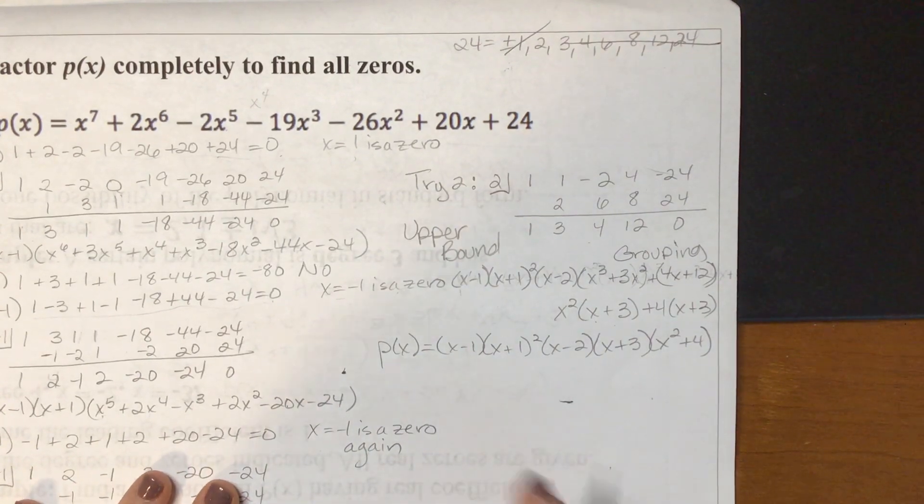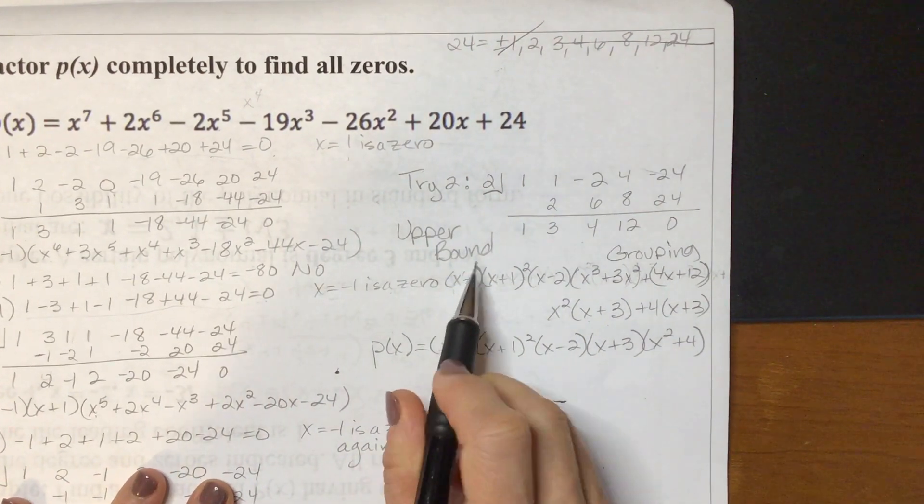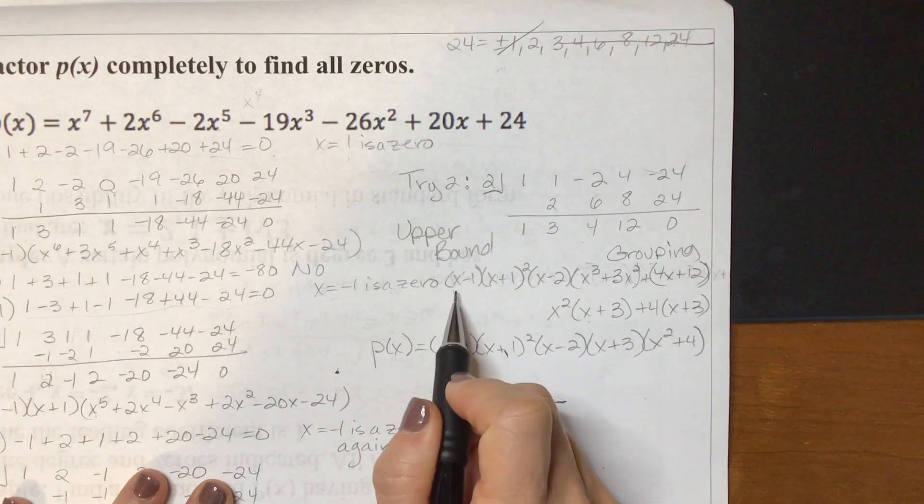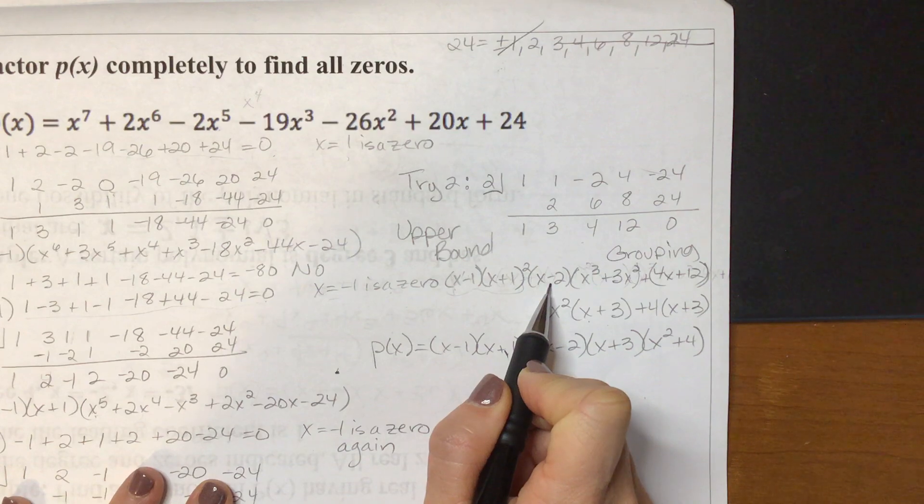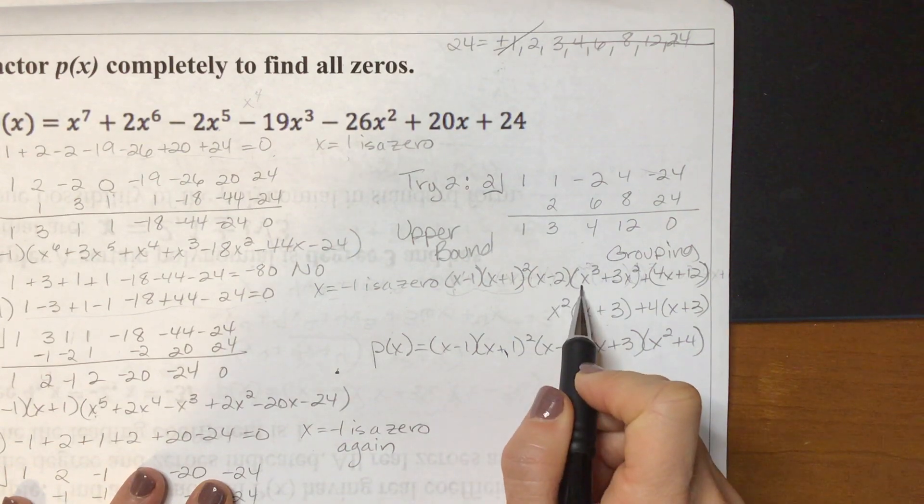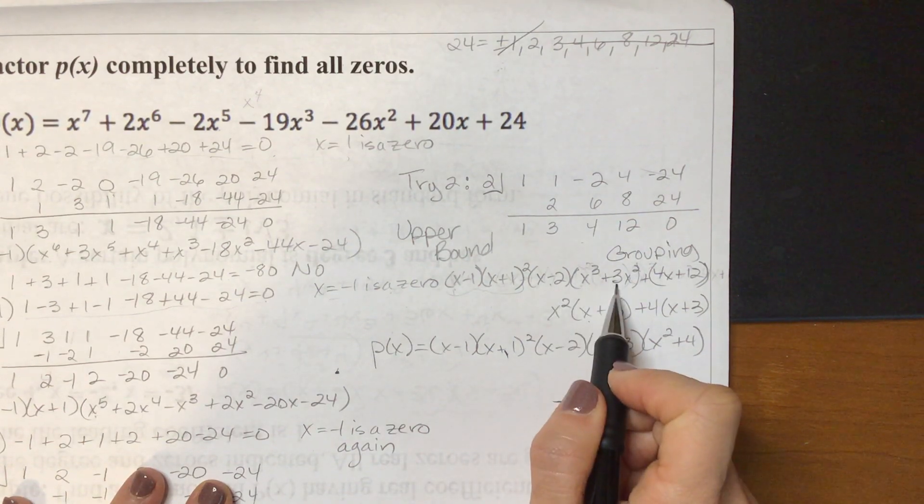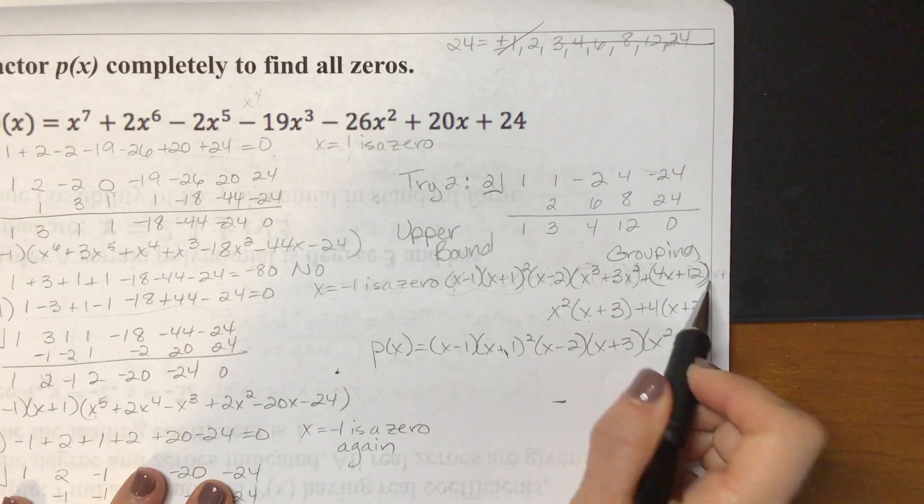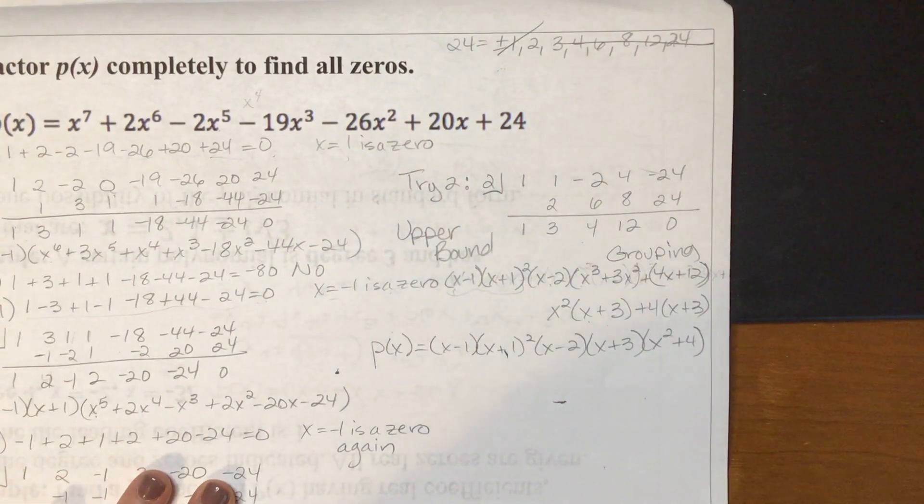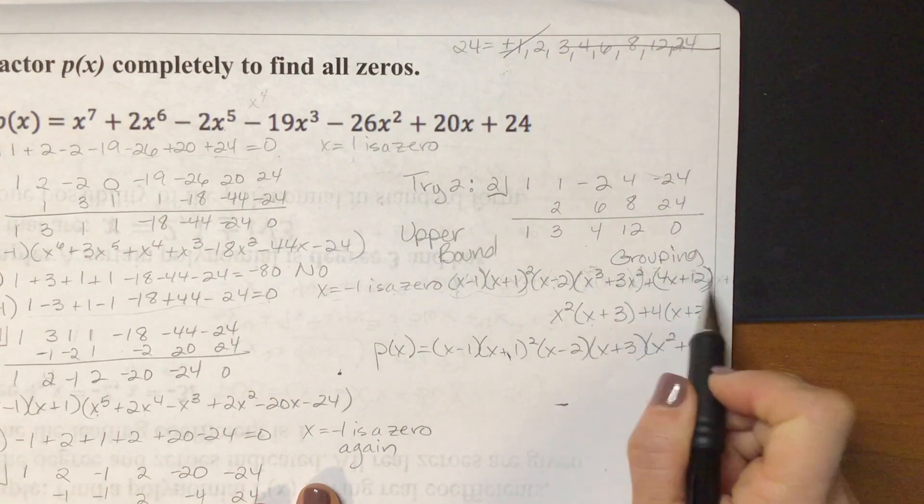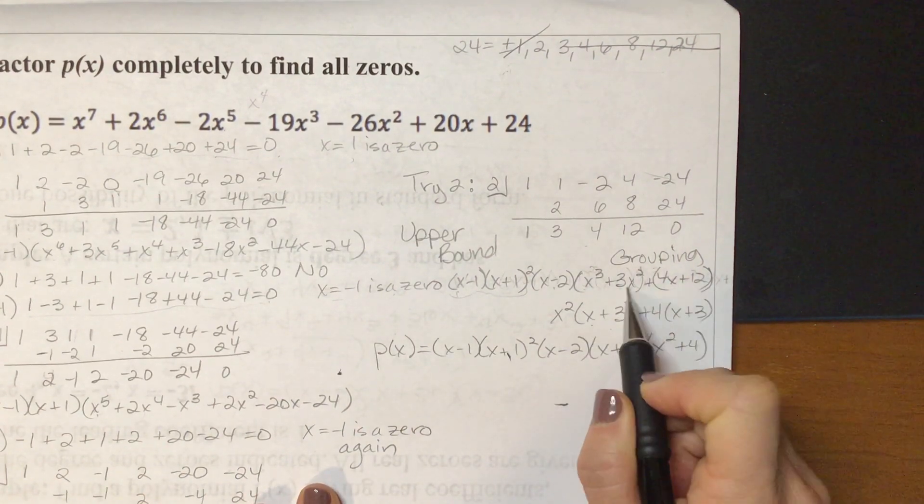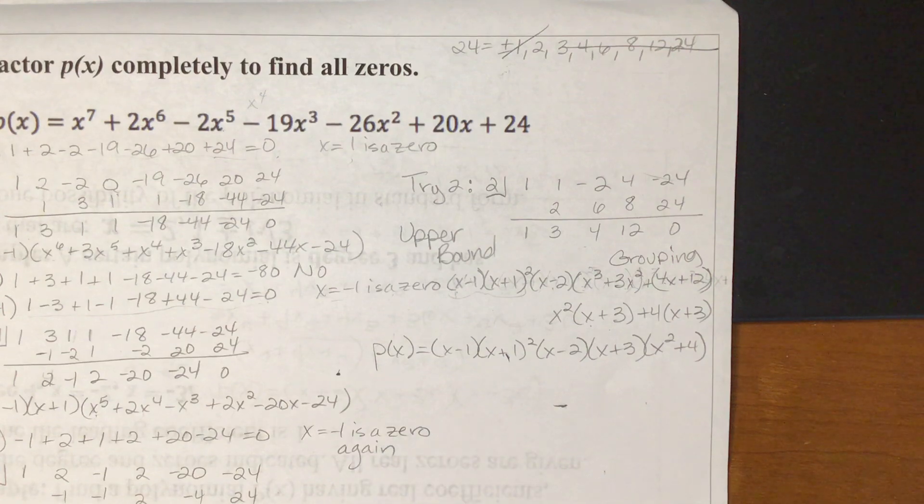And I was really lucky at this point. What resulted from that synthetic division is I still had all my factors from before, and now I added x minus 2. And then what was left was x cubed plus 3x squared plus 4x plus 12. And I recognized I could use grouping there because my first and last term multiplied to 12 and my two middle terms multiplied to 12. Plus I had four terms and it was a cubic.